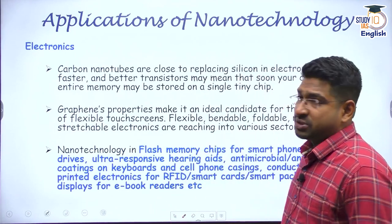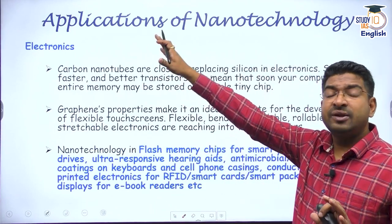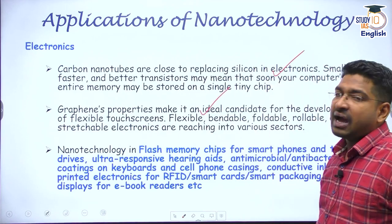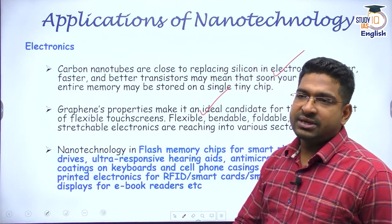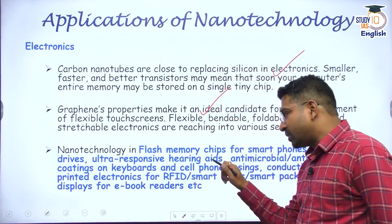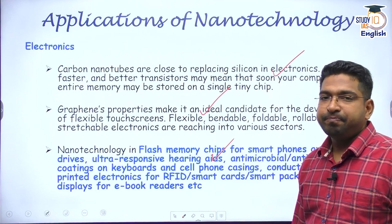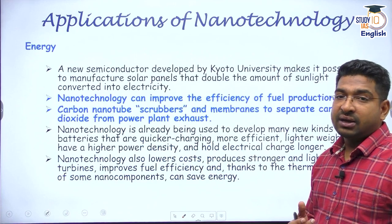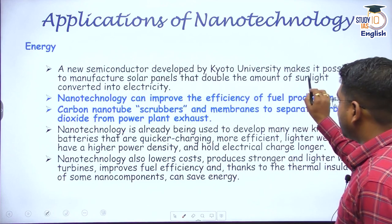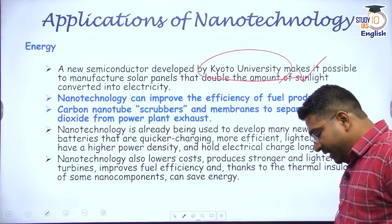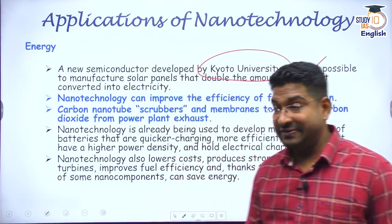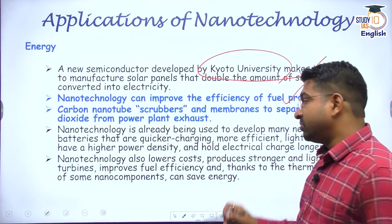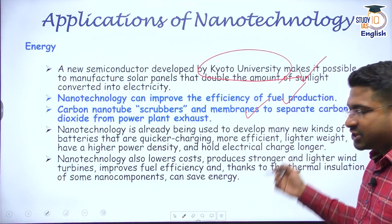If we look at applications, we find them almost everywhere. In electronics, carbon nanotubes are close to replacing silicon. Graphene's novel properties are being looked into for developing new kinds of touch screens. Nanotechnology is already being used in new flash memory chips. In energy, a new semiconductor developed by Kyoto University in Japan is being used in solar panels to convert solar energy to electrical energy very effectively. Nanotechnology is trying to improve fuel production, and carbon nanotube-based scrubbers are being used to reduce exhaust pollution from vehicles.